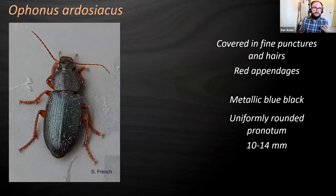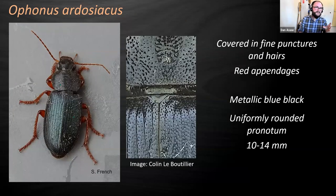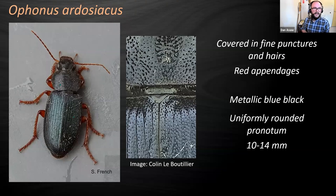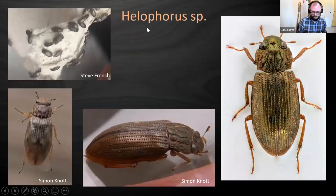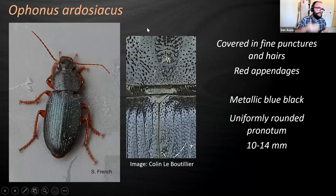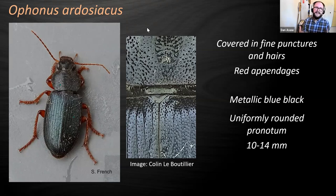Aphodius in general are quite common and can be split quite easily - they're really speckled on top with a dappling effect and quite hairy. Ardociaticus is a big blue one, essentially - it's got curved sides on its pronotum, big red legs, and this amazing metallic blue colour that can be slightly green. Those are the most common species you'll find in your traps.